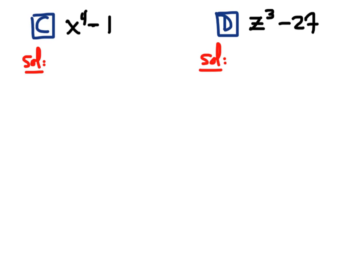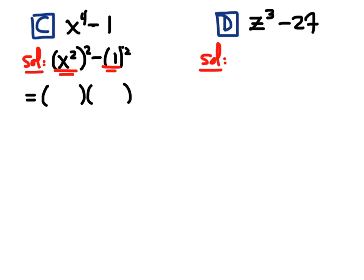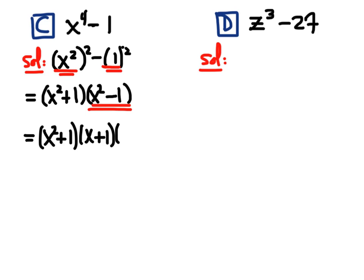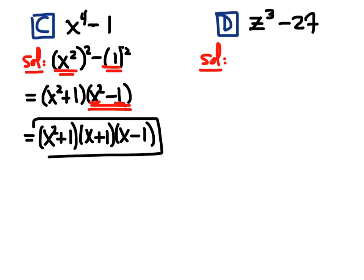Let's look at how to factor x to the fourth minus 1. Again, this is a difference of squares, so we rewrite it as x squared squared minus 1 squared. You'll need to learn techniques to rewrite these things so you can see the form. So x squared is the x from your equation and 1 is the y, giving us x squared plus 1 times x squared minus 1. You might think you're done, but x squared minus 1 is another difference of squares. So the fully factored form is x squared plus 1 times x plus 1 times x minus 1.